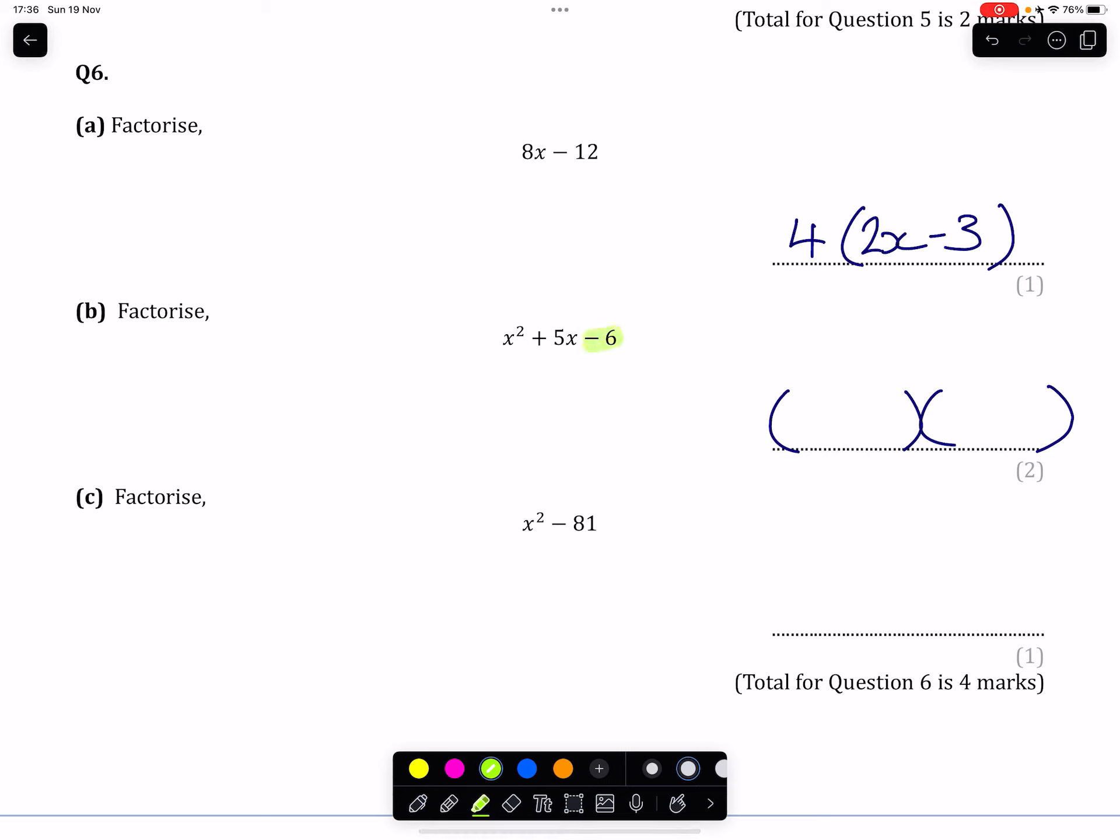What we're looking for is what multiplies together to make minus 6, and what then adds together to make 5. So our options for multiplying will involve 1, 6, and 2, and 3, where one of the terms is going to be a positive and one's going to be a negative.